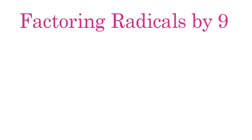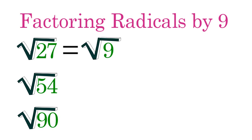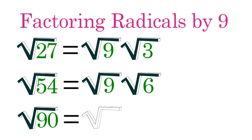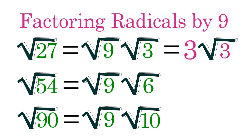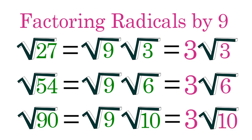Similarly, you can simplify any radical of a number that's divisible by 9 by factoring out a radical 9 and then simplifying this to 3. For example, radical 27 equals 3 radical 3, radical 54 equals 3 radical 6, and radical 90 equals 3 radical 10.